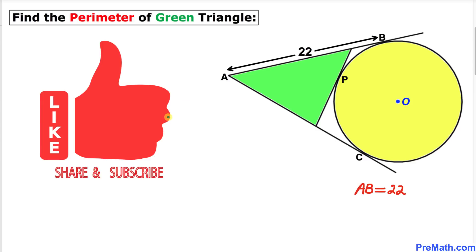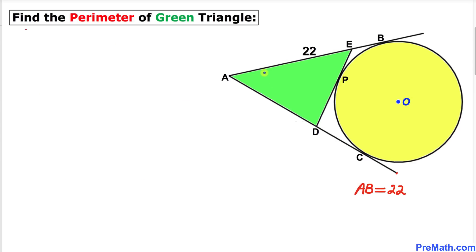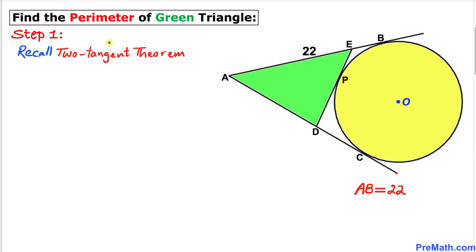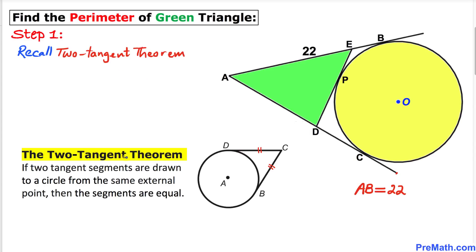Let's go ahead and get started with the solution. Here's our very first step: let's recall the Two Tangent Theorem. If two tangent segments are drawn to a circle from the same external point, then the segments are equal in length.